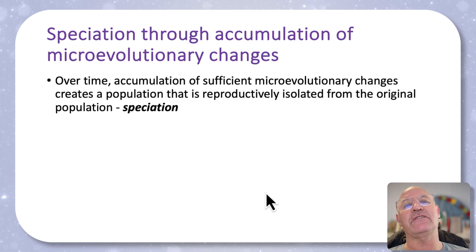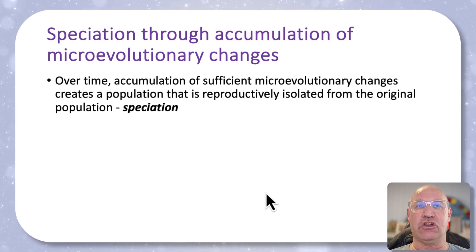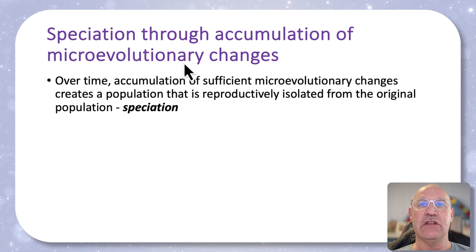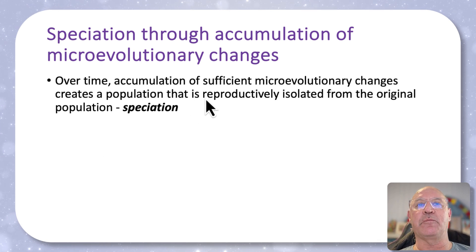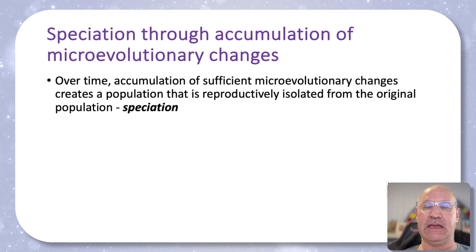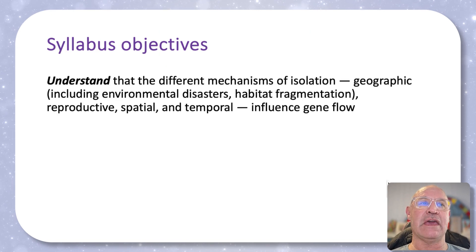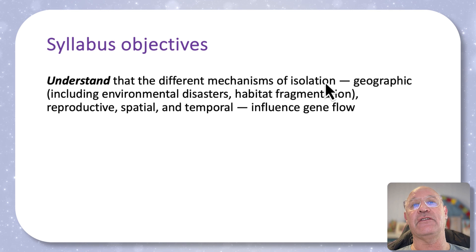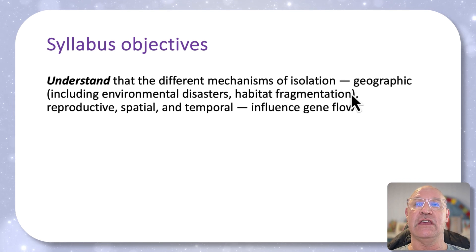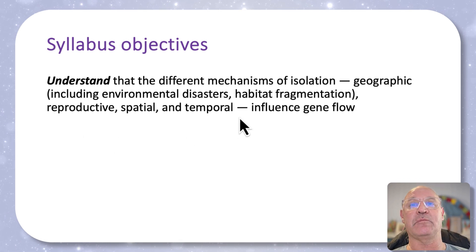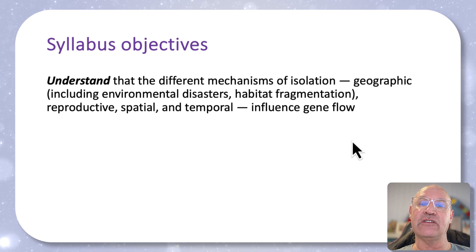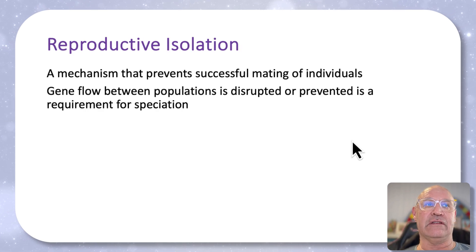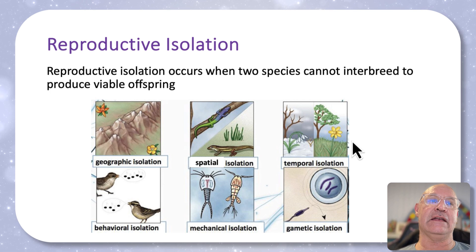Coming back to this concept: speciation occurs through the accumulation of microevolutionary change to the point where populations are reproductively isolated. The syllabus objective says we need to understand the different mechanisms of isolation: geographic, reproductive, spatial, and temporal. Essentially all of these influence gene flow.